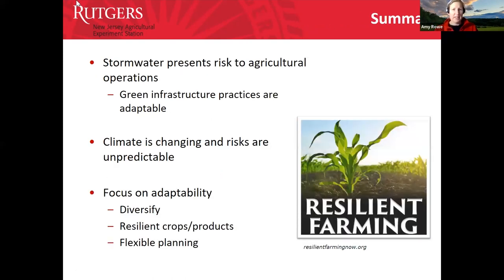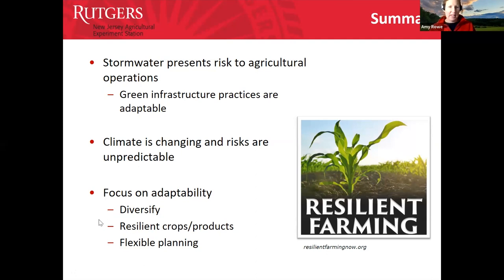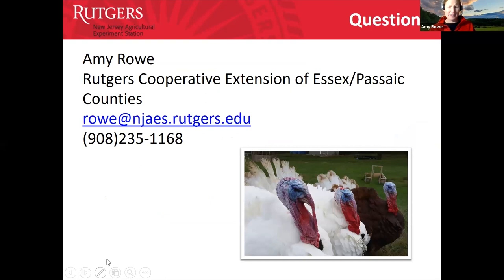In summary: stormwater presents risk to agricultural operations, climate is changing and risks are unpredictable, and you need to focus on adaptability. Here are the practices we covered — and here is my contact information.